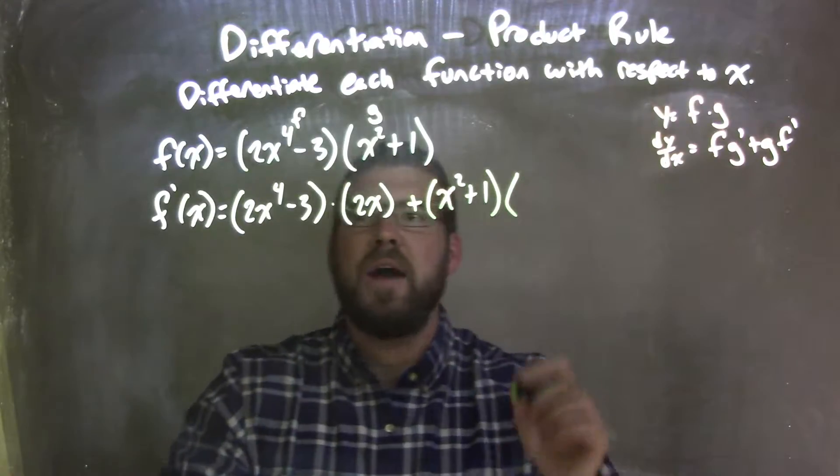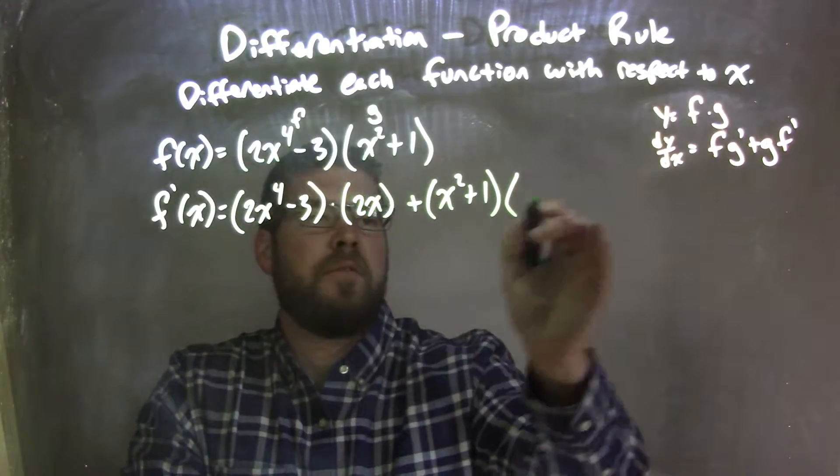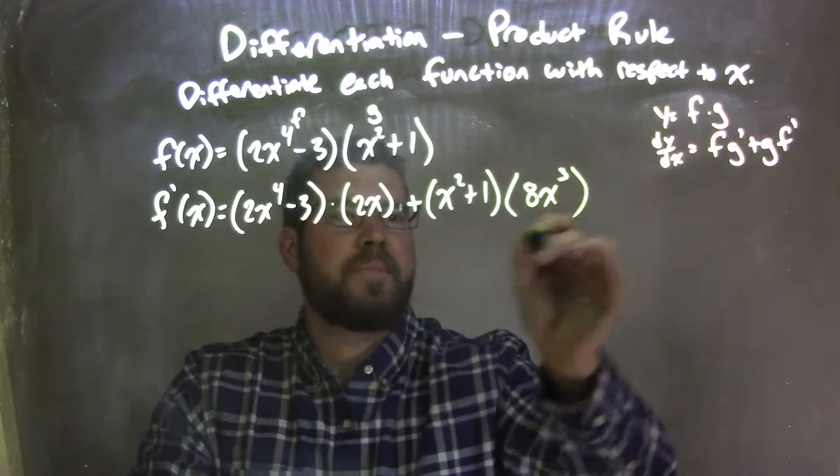Which is, well, 2x to the 4th minus 3, derivative of that is 8x to the 3rd.